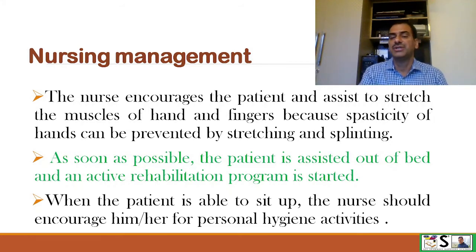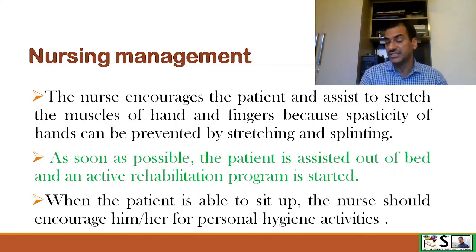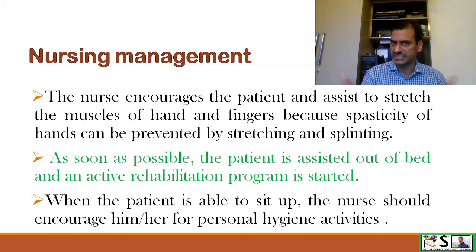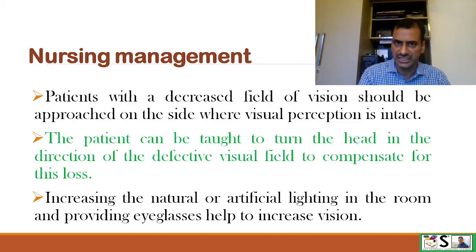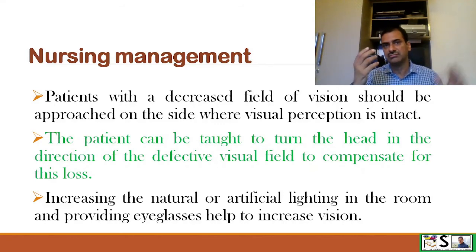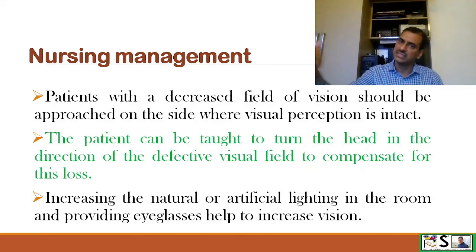As soon as possible, the patient is assisted out of bed and an active rehabilitation program is started. When the patient is able to sit up, the nurse encourages personal hygiene and activity to prevent muscle loss and contractures. For patients with decreased visual field, the nurse should approach from the side where visual perception is intact — if the right side is affected, approach from the left, and vice versa.